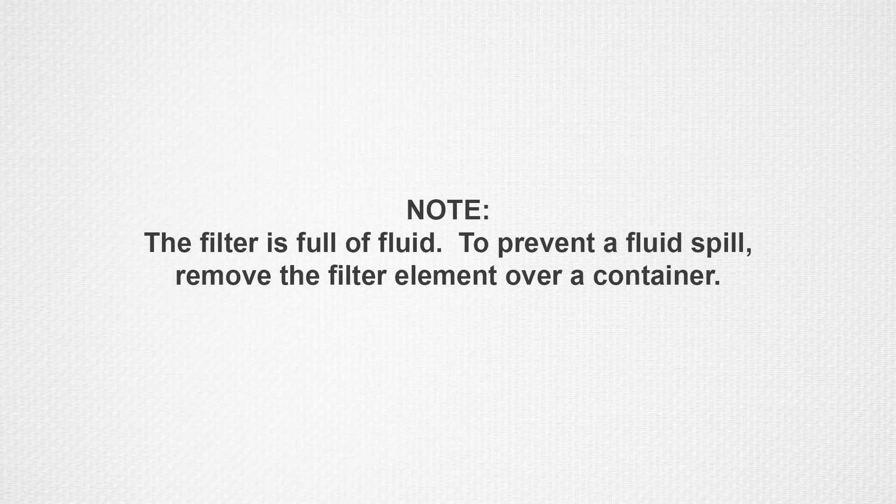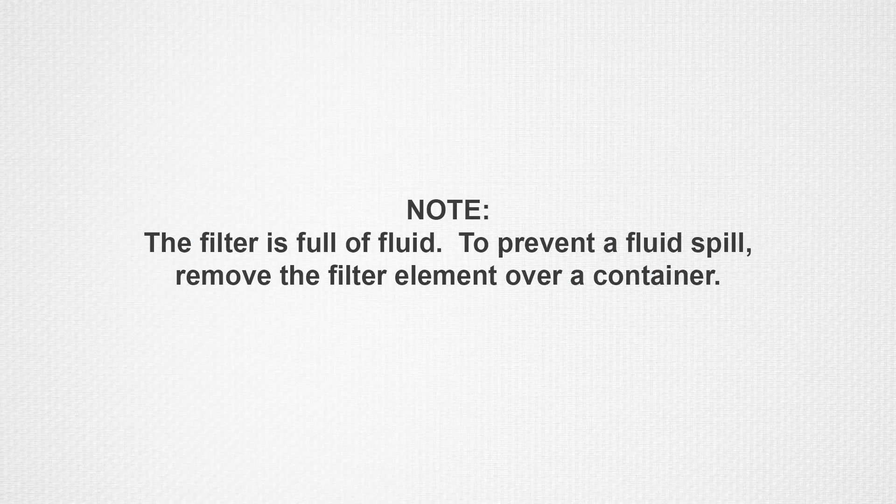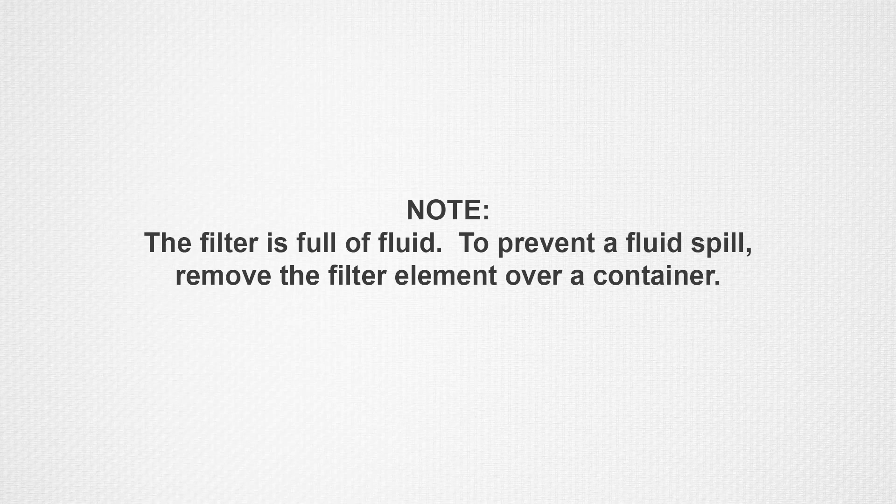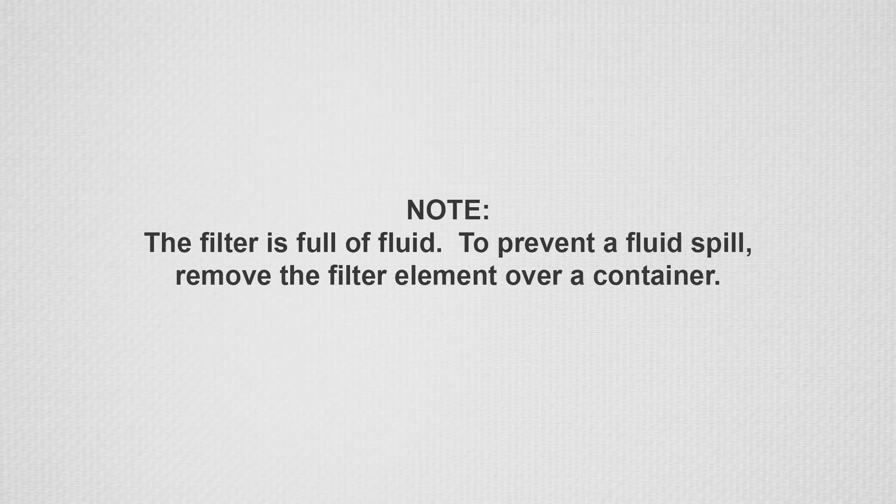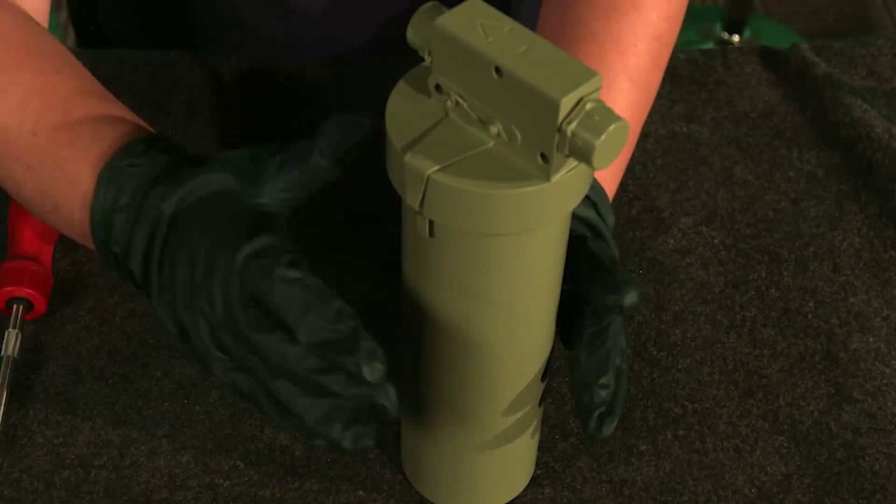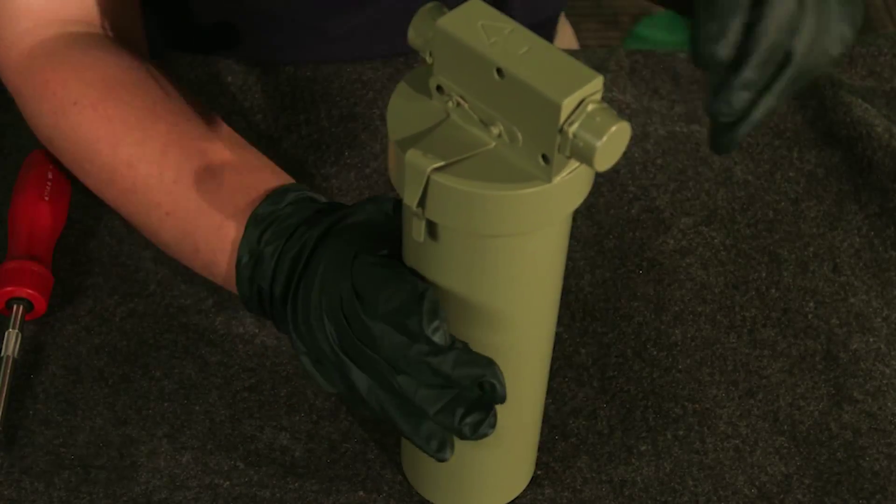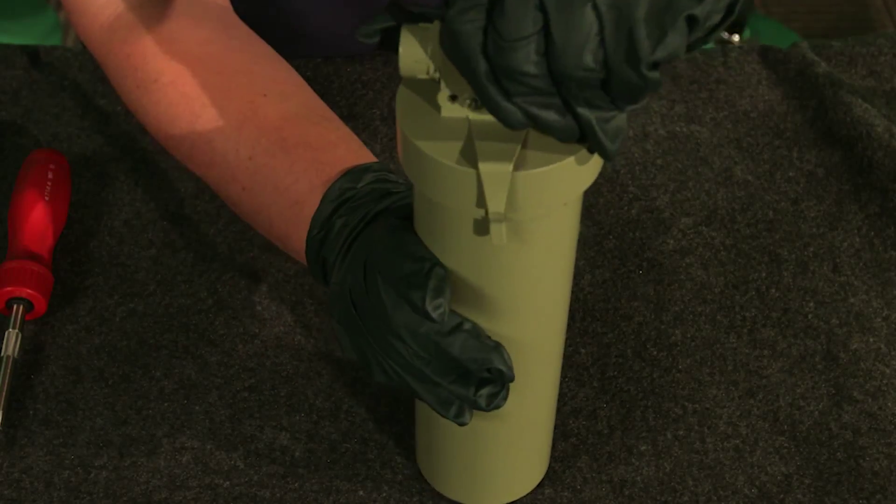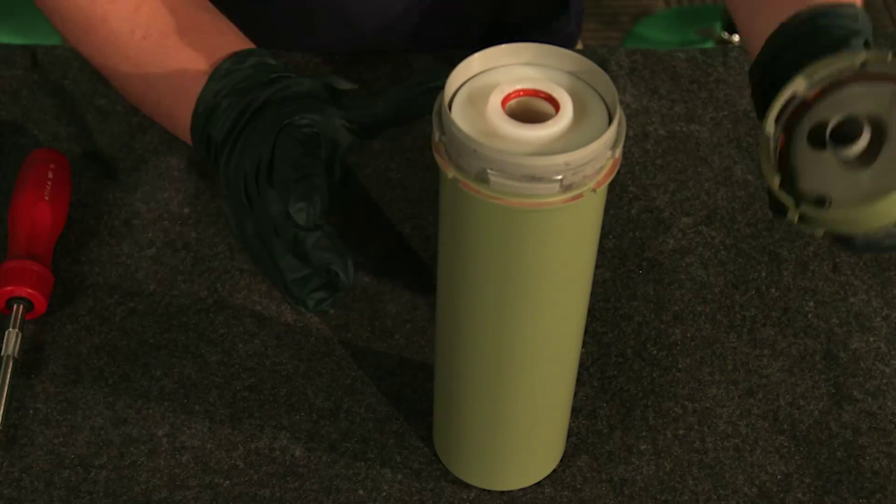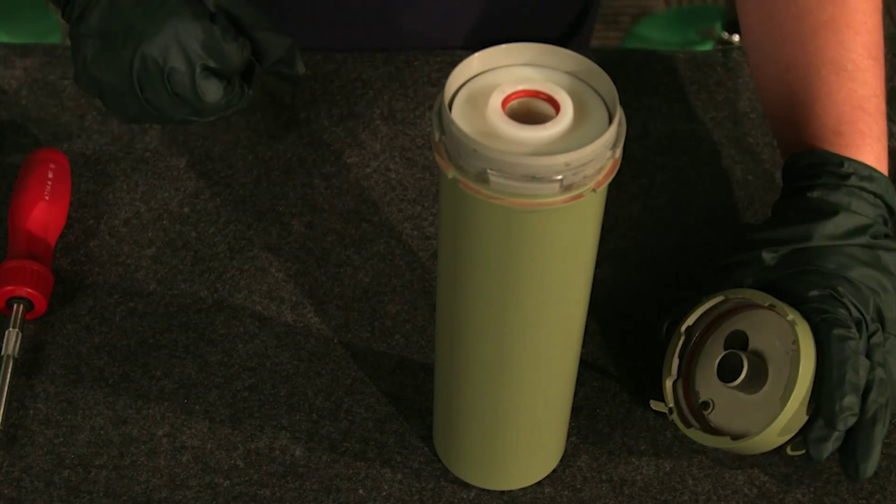Note that the filter is full of fluid. To prevent a fluid spill, remove the filter element over a container. Hold the filter over a container and do as follows: lift the bottom of the clip and then turn the filter bowl 45 degrees. Remove the filter bowl from the filter head.